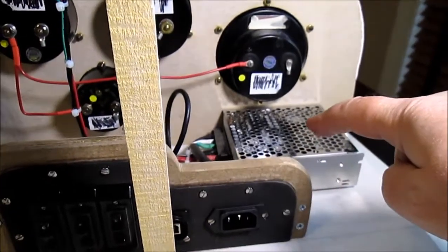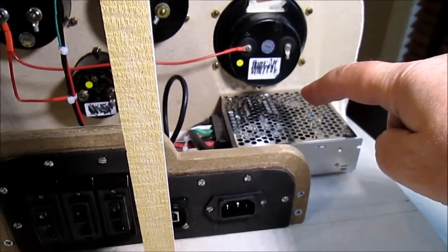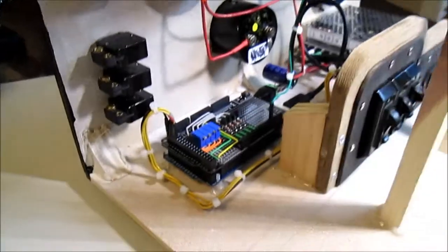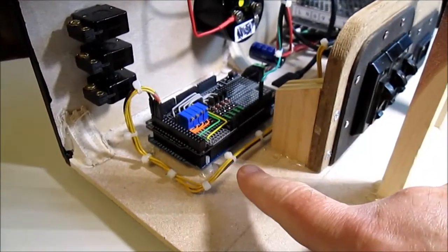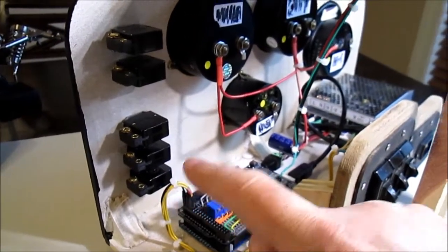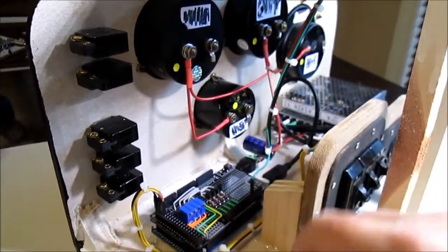So first of all we've got a five volt regulated power supply and then over on this side we've got an Arduino Mega at the bottom. These are the five switches going through to the front panel and of course we've got the meters.